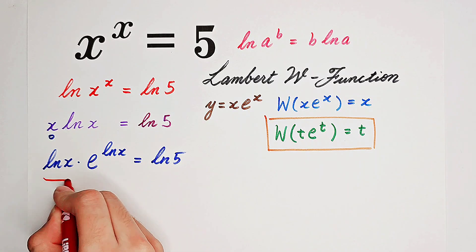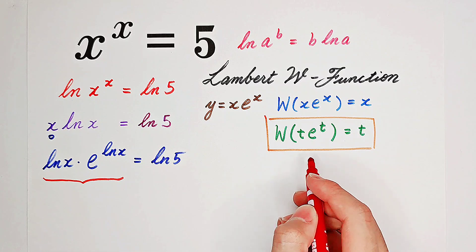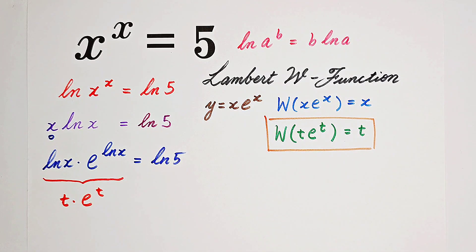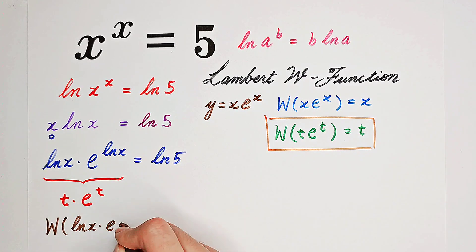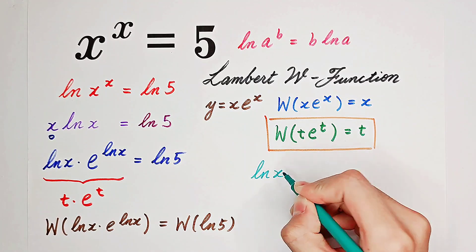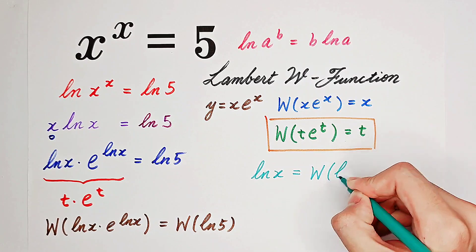Now you can find that our left-hand side has the form of our Lambert W function: t times e to the power of t, where t is just the natural log of x. So if we take the Lambert W function on both sides, the left-hand side is going to be the natural log of x, and the right-hand side is the Lambert W function of the natural log of 5.